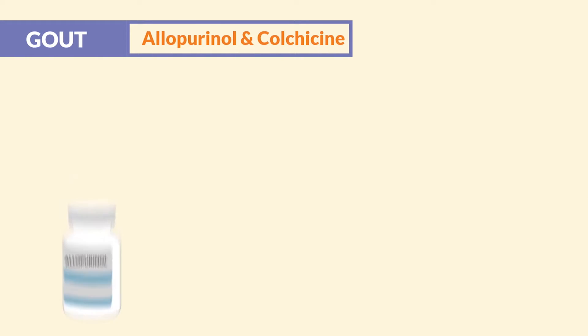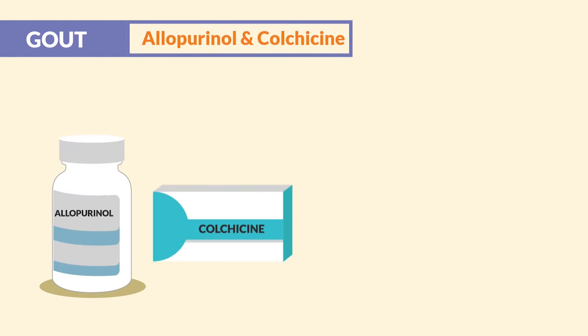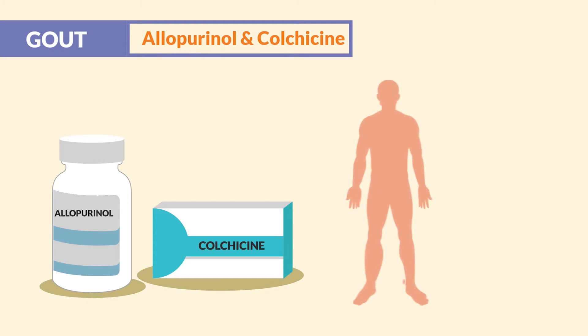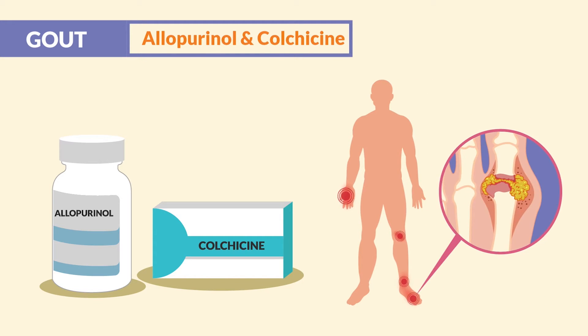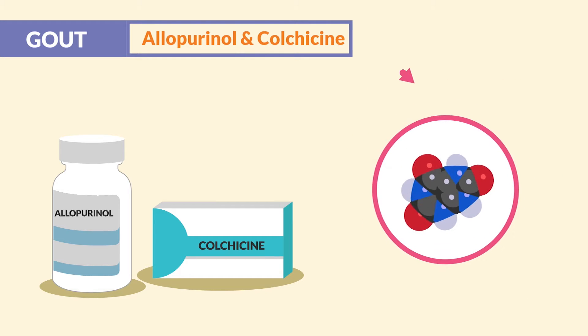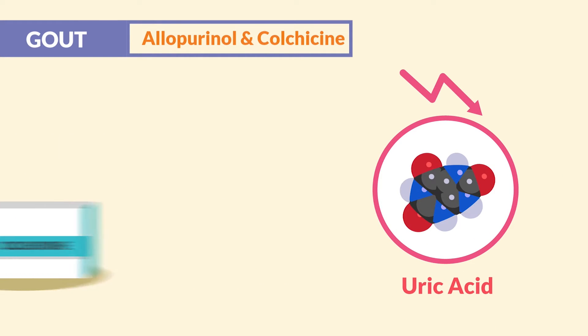Alright guys, let's begin! Starting with gout, we have allopurinol and colchicine. These drugs are given to patients with gout where a lot of uric acid buildup causes inflammation in the joints. So naturally, it's a uric acid reducer.